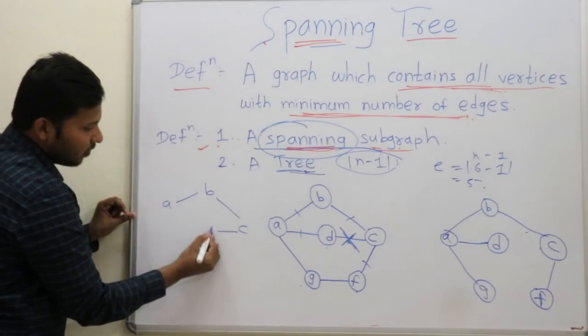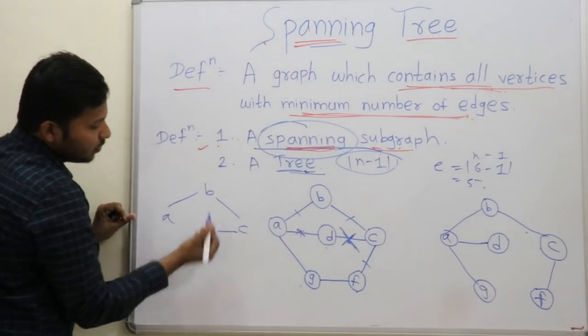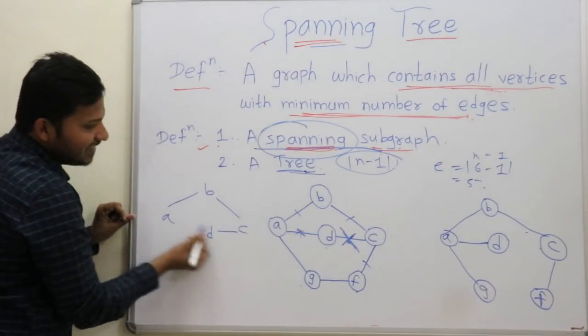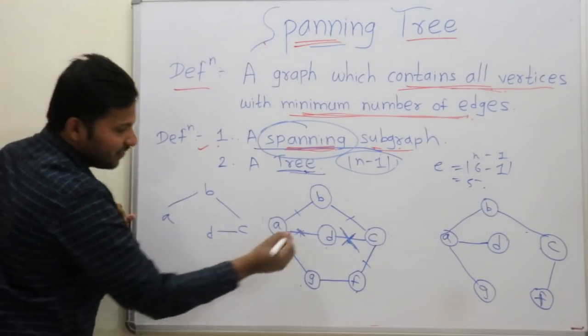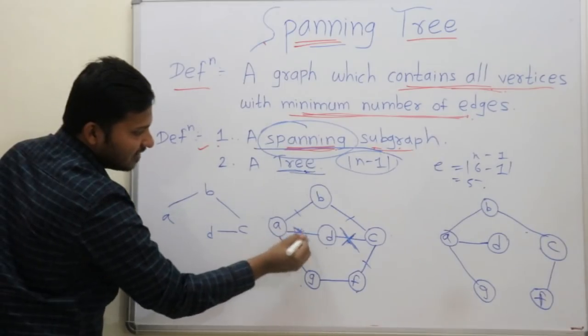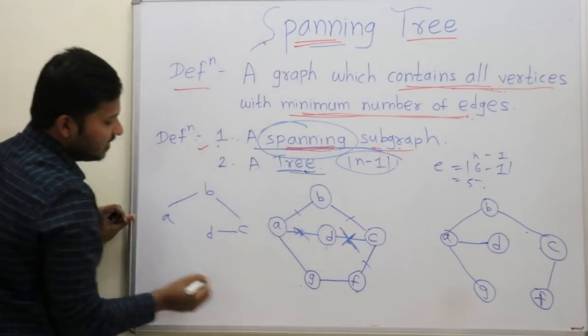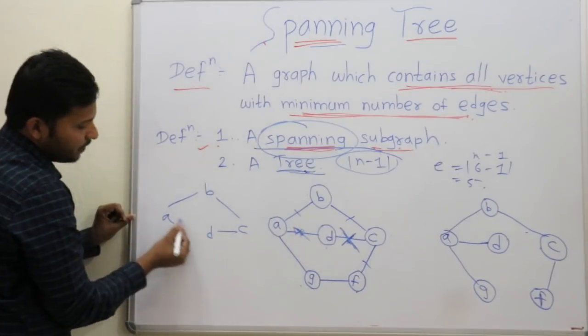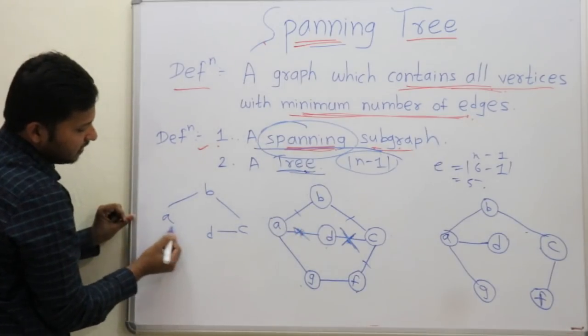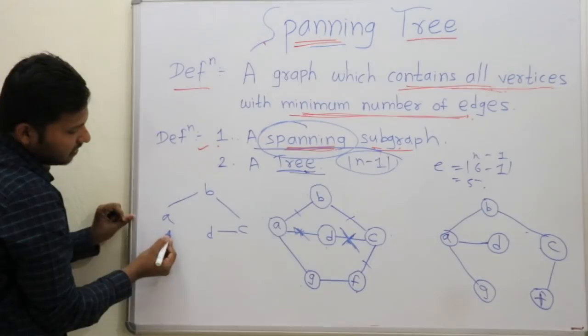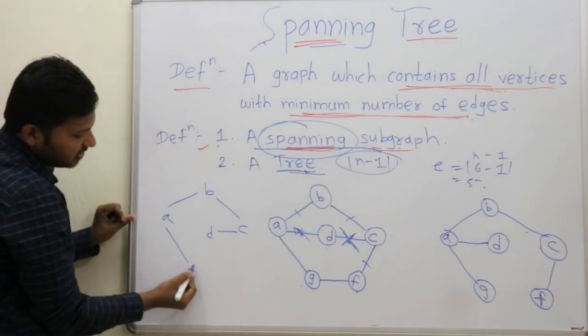You cannot take D, A because it forms a cycle. So take A, G.